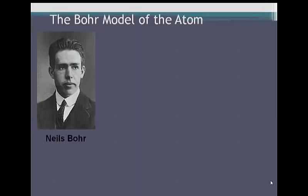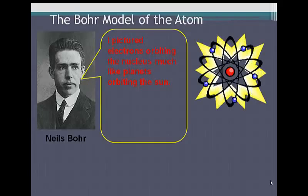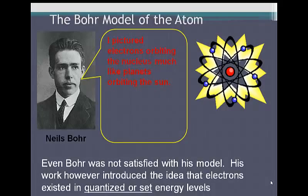Niels Bohr introduced us to one of the most recent models of the atom. In his atom, he pictured electrons orbiting around the nucleus, much like planets orbiting the Sun. This is a picture of his atom. Even as he introduced his atom, he was concerned that as he tried to apply his model to larger and larger atoms, his model would start to fall apart. So he knew it wasn't quite right.